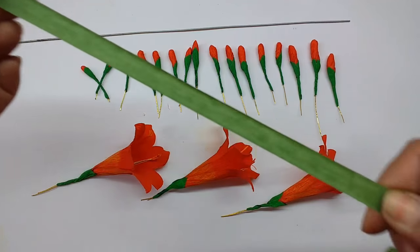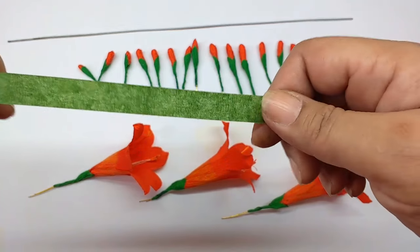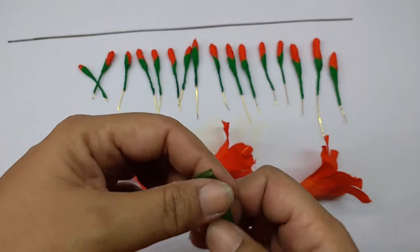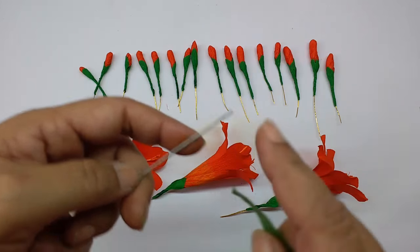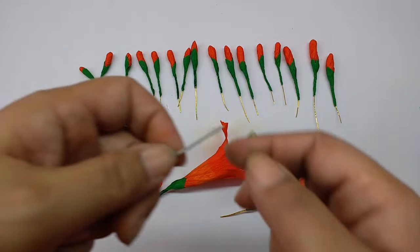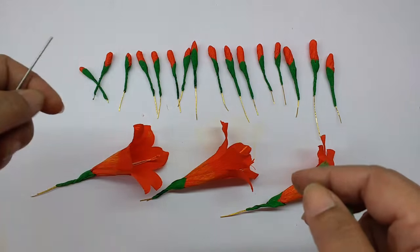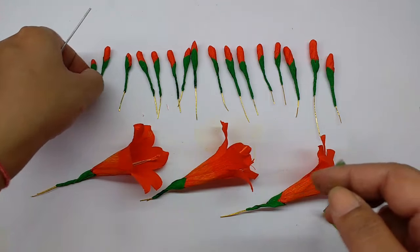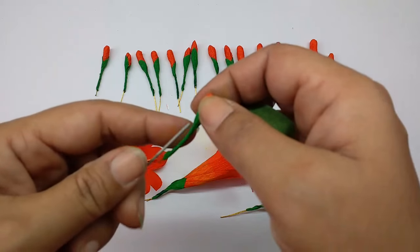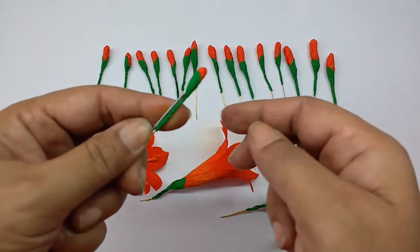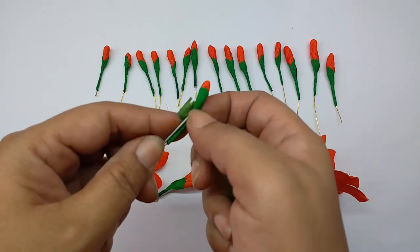Stretch it. Now take a thick wire. This wire should not be very thick, it should be just comfortable which you can bend easily. Now take the smallest bud, hold it on top of the wire and then start binding the tape on it.